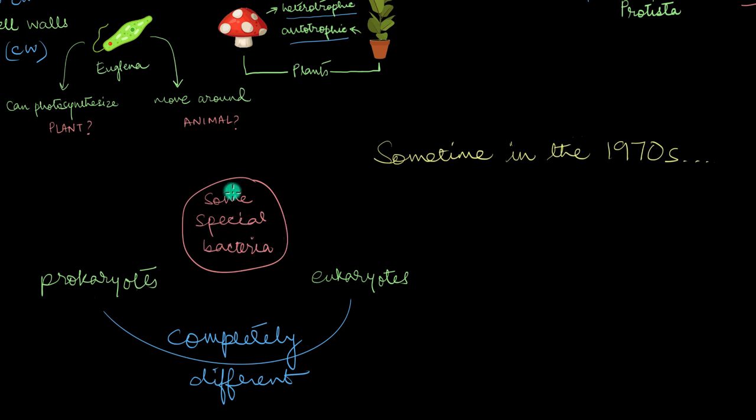Now mind you, these special bacteria are still prokaryotes, like they have no nucleus or any membrane-bound organelles. But yes, these bacteria, these special ones, they have certain things which you won't find in the other bacteria or the other prokaryotes. That makes these very special bacteria stand apart from both the eukaryotes as well as the other prokaryotes that are there.